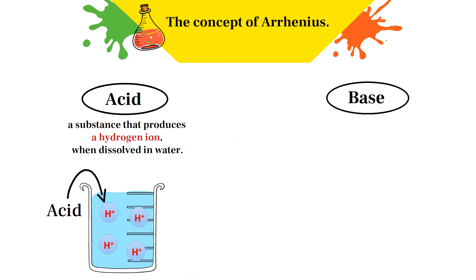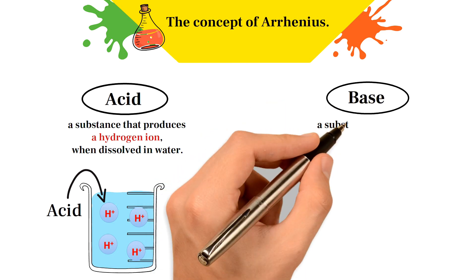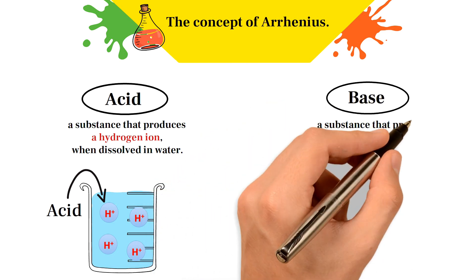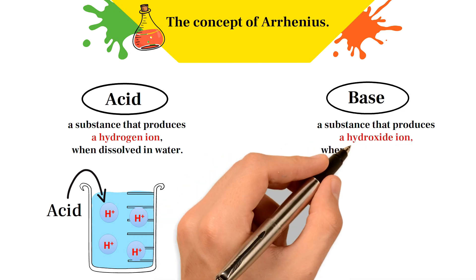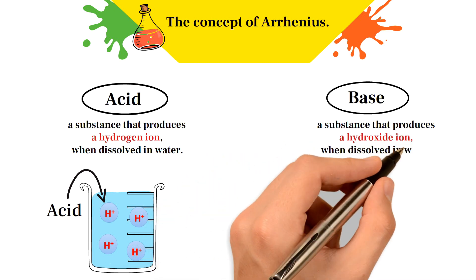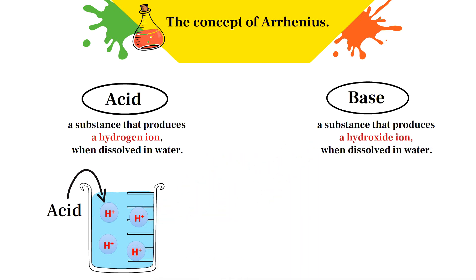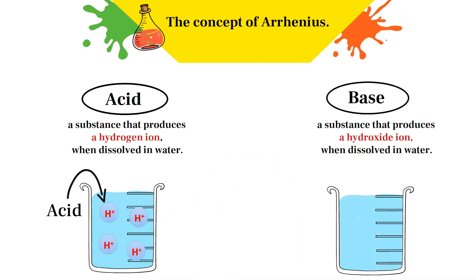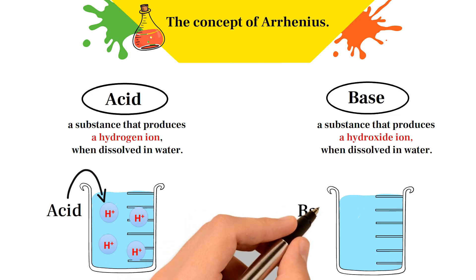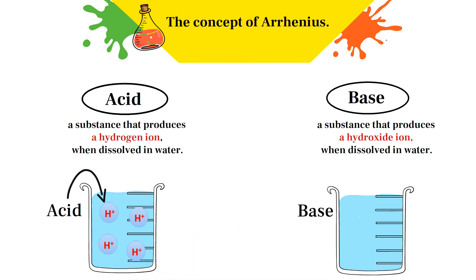Arrhenius defines the base as a substance that produces a hydroxide ion when dissolved in water. Thus, the definition of Arrhenius stipulates that the base should contain an ionizable hydroxide group in its structure and be dissolved in water.